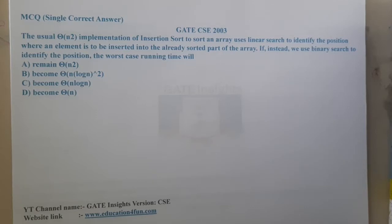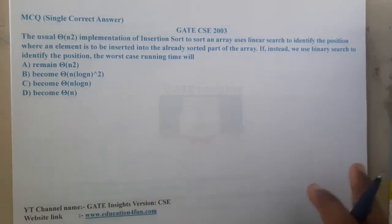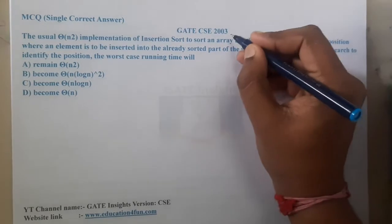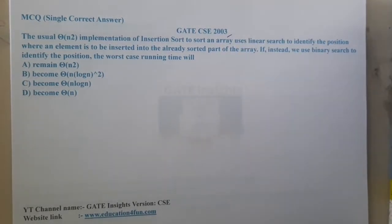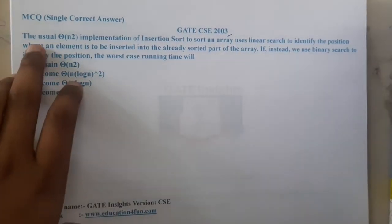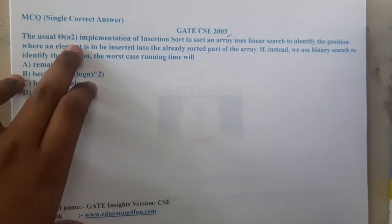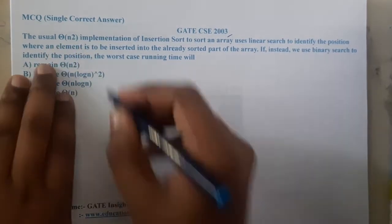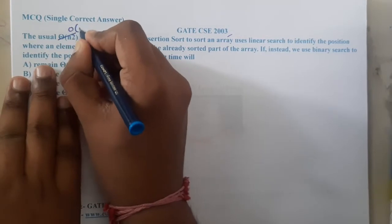Hello guys, we are back with our next lecture. In this lecture, let us go through the next question. This question belongs to GATE CSE 2003. The question is: the usual big O of n square—I think it should be n square.